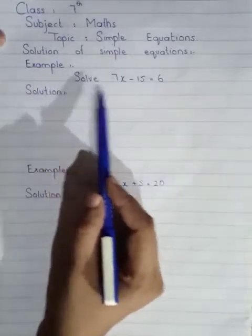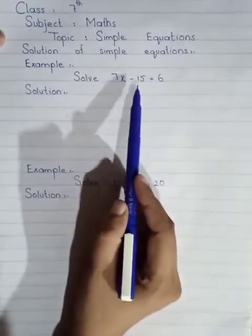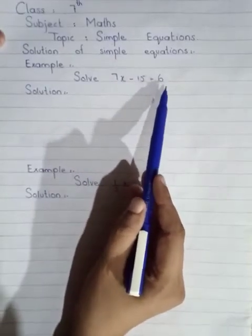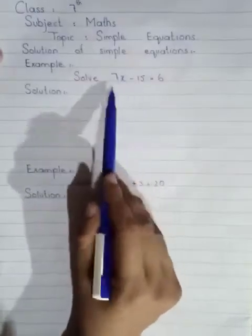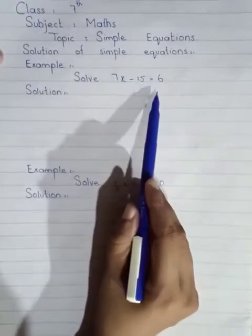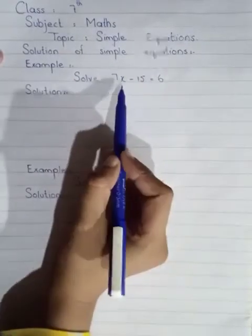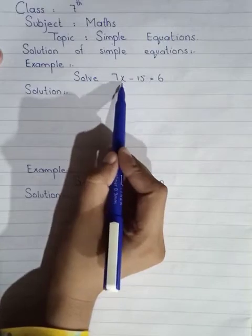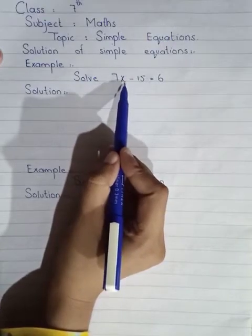Example number one: solve 7x minus 15 is equal to 6. Students, this is our equation and x is the unknown quantity — we have to find out the value of x.